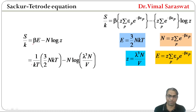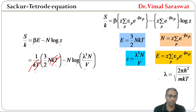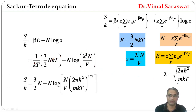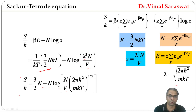With β replaced by 1/kT, E by (3/2)NkT, and Z by Nλ³/V, where λ = √(2πħ²/mkT) is the thermal wavelength, the entropy expression becomes S/k = (3/2)N − N·log(N/V · (2πħ²/mkT)^(3/2)).